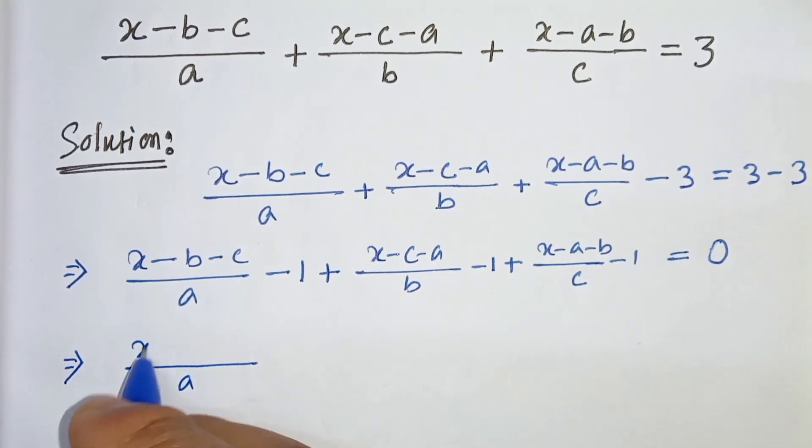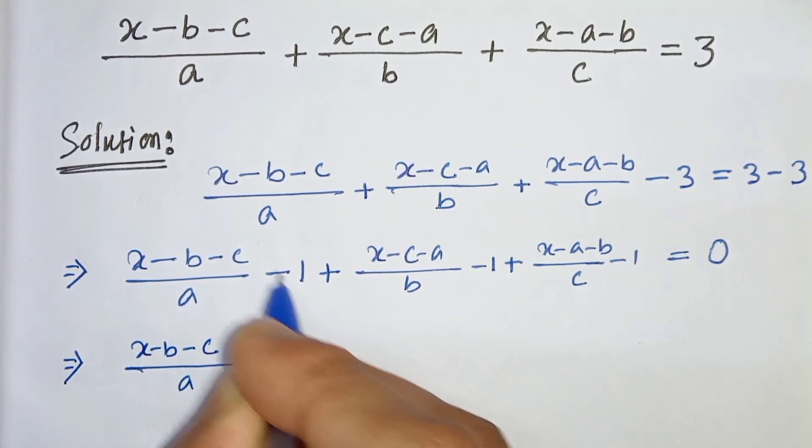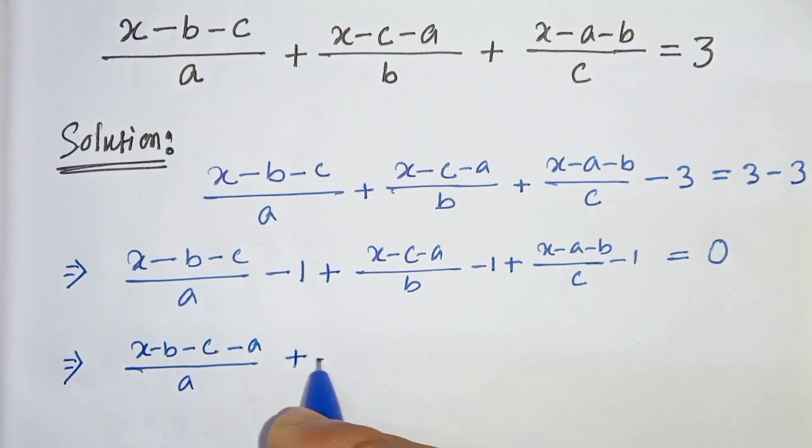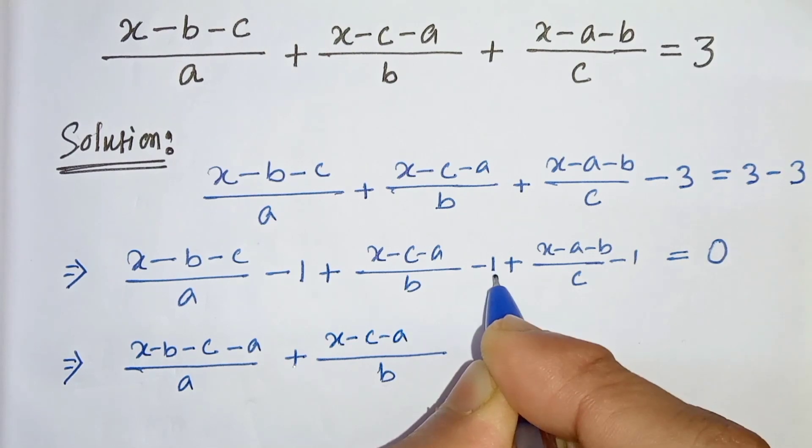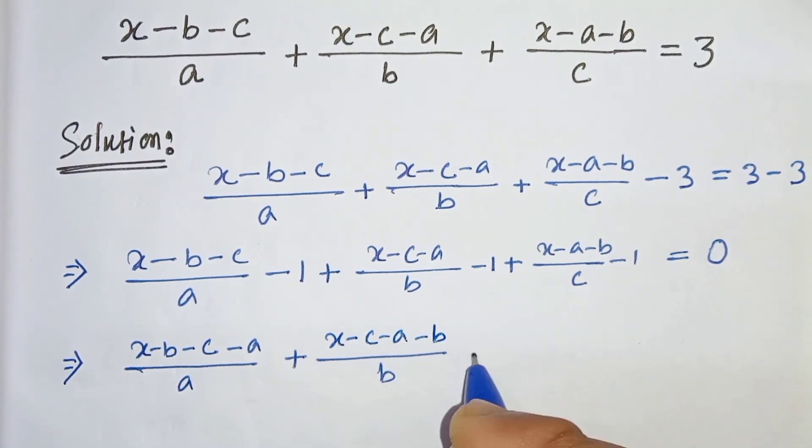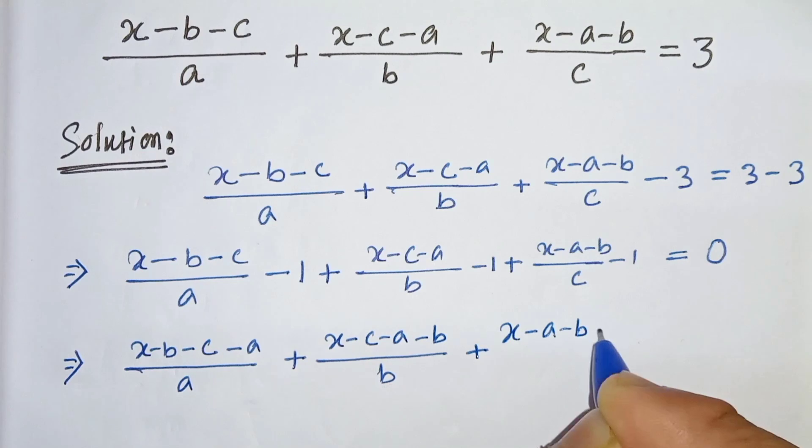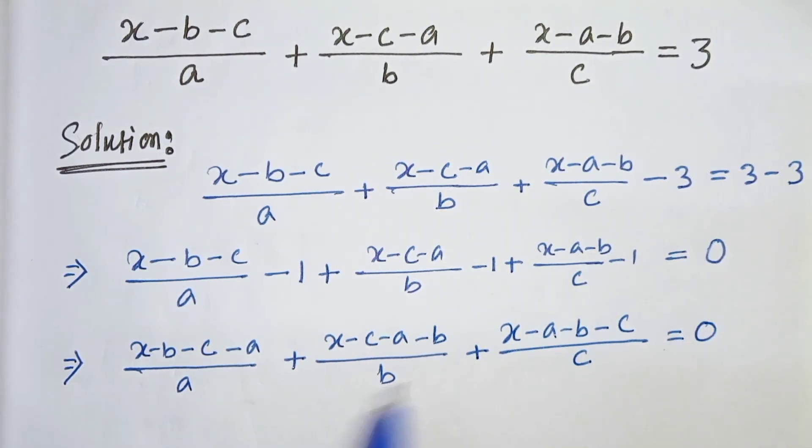So here it will be x minus b minus c and minus a. Plus x minus c minus a and b times minus 1 is minus b. Plus x minus a minus b minus c divided by c equals to 0.